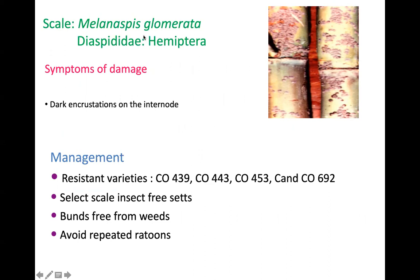The scale insect is Melanaspis glomerata, family Diaspididae — the family is very important to remember as it is asked directly in exams — order Hemiptera. The damage appears as a thick dark incrustation between the internodal region, which is easily spotted. This incrustation is very hard to scrape; it requires a knife, not nails or fingers. It completely loses marketable value as consumers will not buy such sugarcane.